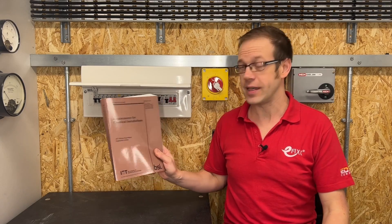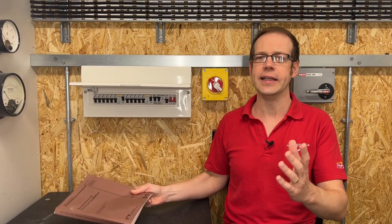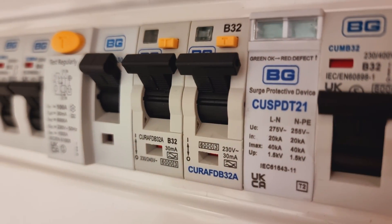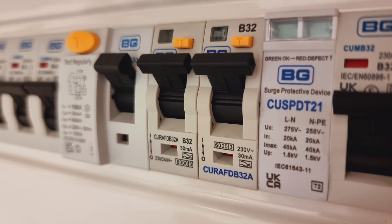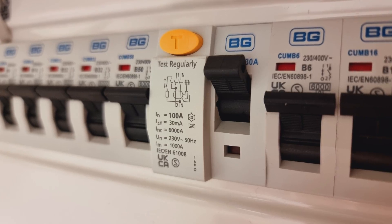During the build-up to and the launch of the Second Amendment to the 18th edition, we all got very caught up in the storm of controversy surrounding the increased use of AFDDs, and it's possible that we overlooked some of the other key changes regarding circuit protection, including the changes that took place to the requirements for RCDs. So what changes did happen with RCDs in the latest amendment to the wiring regs?